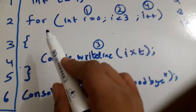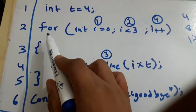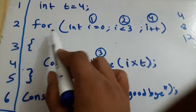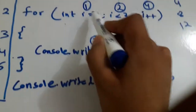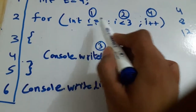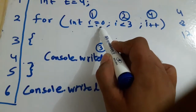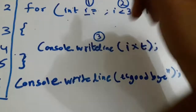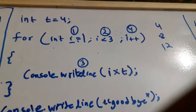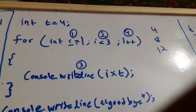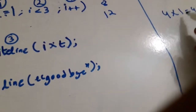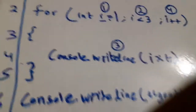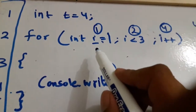The first line created one variable of four bytes called t with value four. After that, the for loop starts. The syntax is: for, then initialization of the loop variable. The loop variable is i, and we are initializing it to one, because for the first iteration we want four multiplied by one equals four.